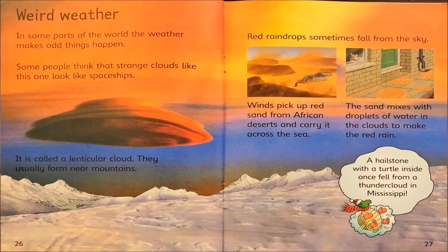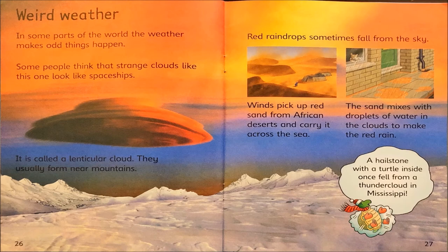Weird weather. In some parts of the world, the weather makes odd things happen. Some people think that strange clouds like this one look like spaceships — it is called a lenticular cloud, and they usually form near mountains. Red raindrops sometimes fall from the sky: winds pick up red sand from African deserts and carry it across the sea, where the sand mixes with droplets of water in the clouds to make red rain. A hailstone with a turtle inside once fell from a thundercloud in Mississippi.